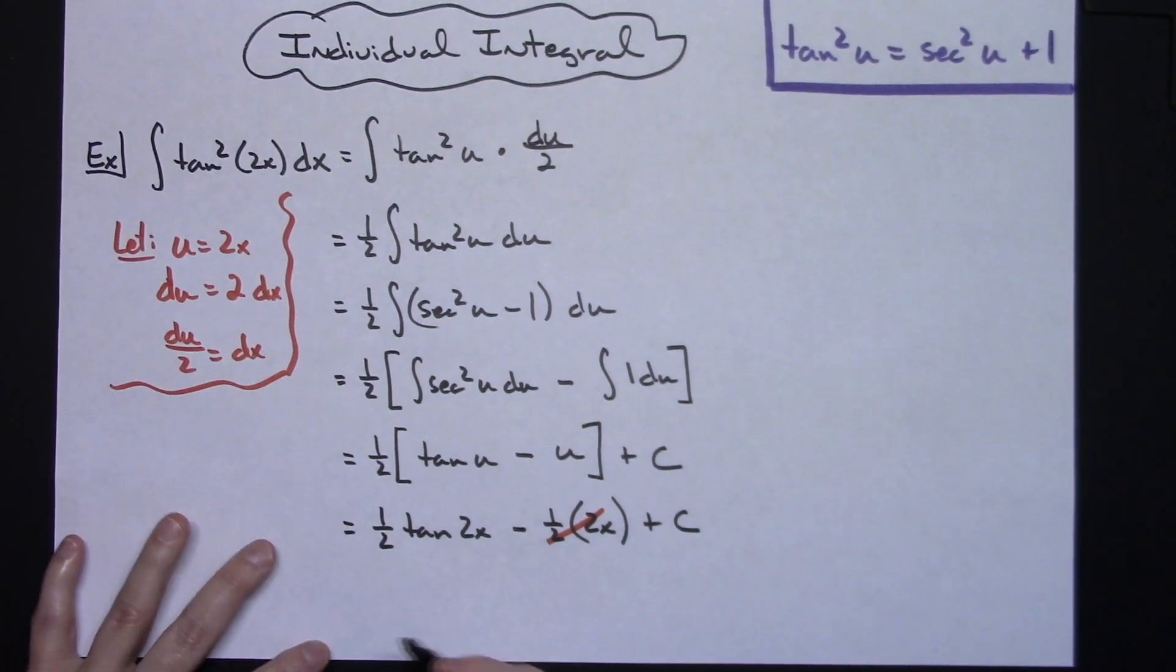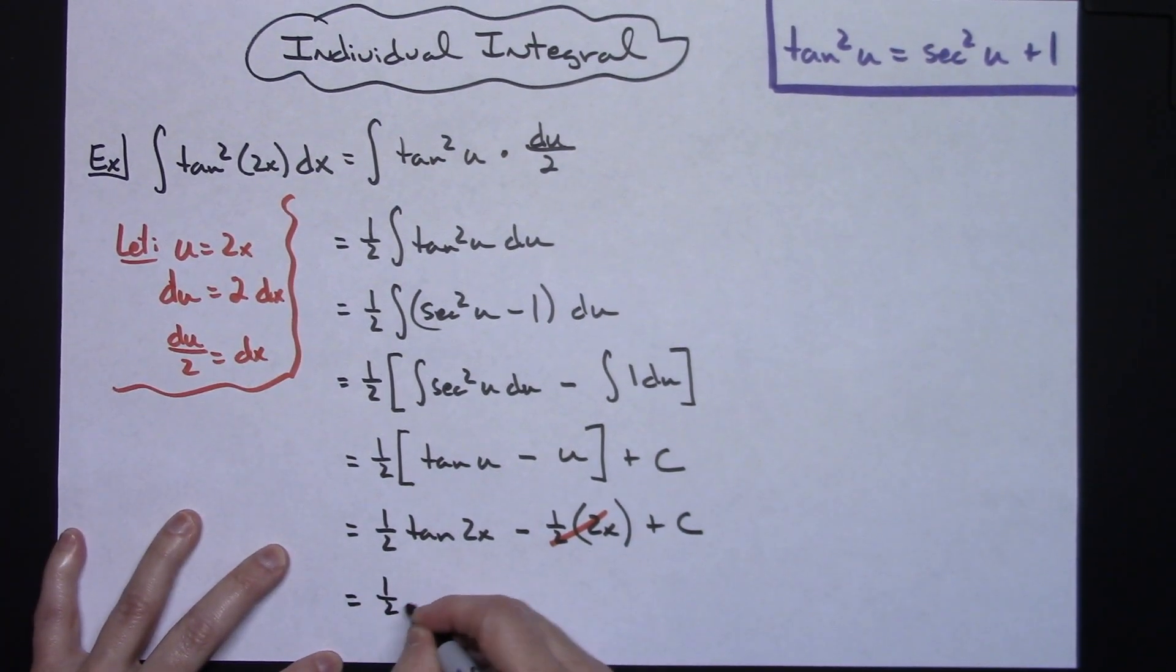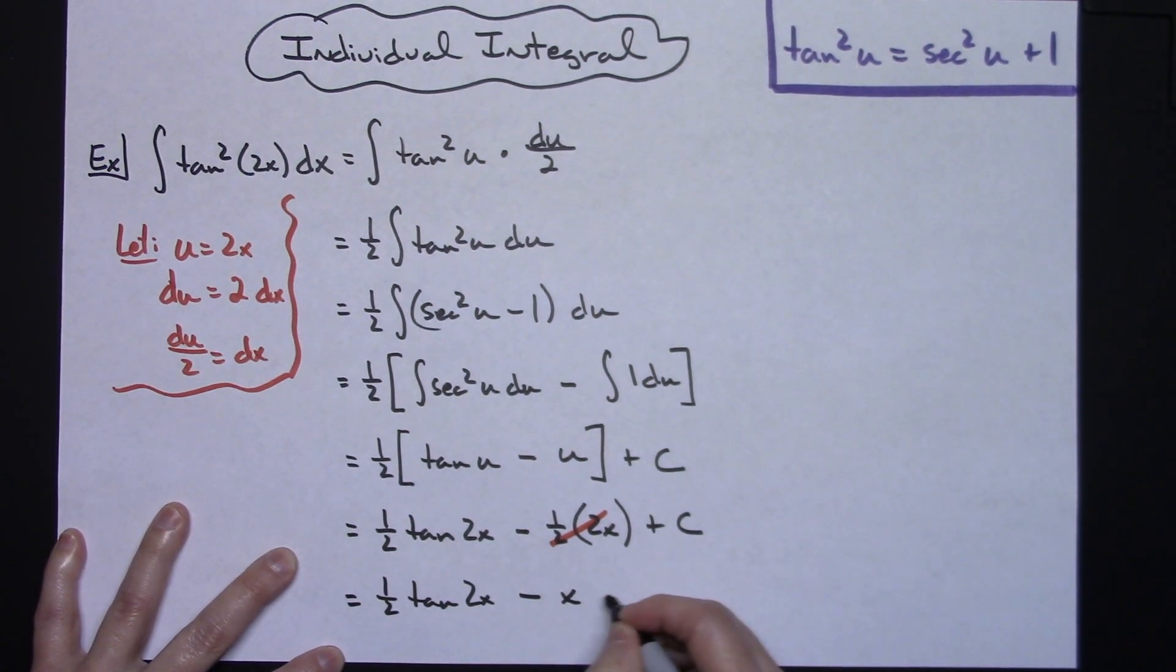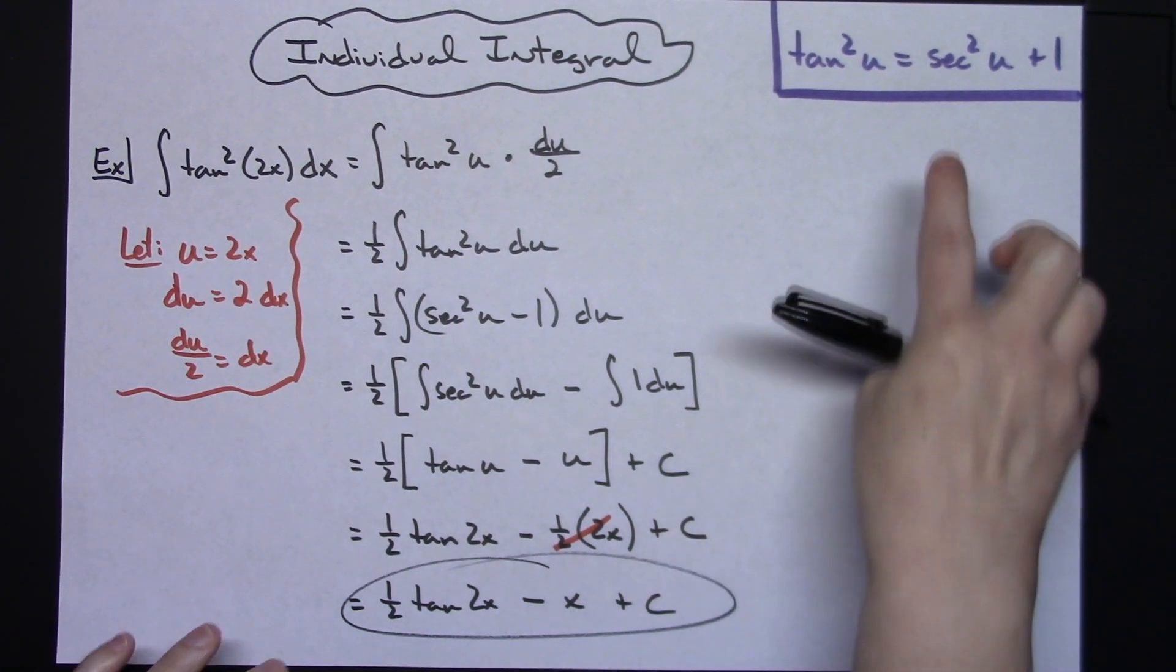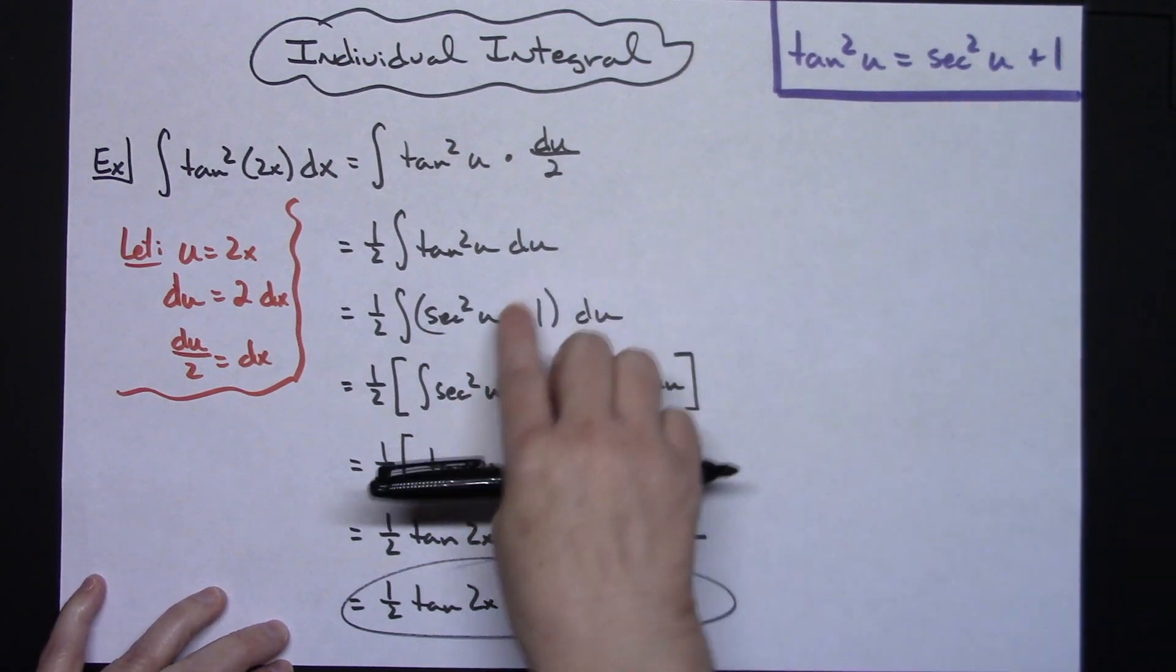So then we'll have one-half tangent 2x minus x plus C. So definitely a straightforward u-substitution problem here, with only one trig substitution there with that trig Pythagorean identity.